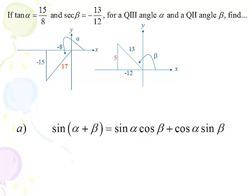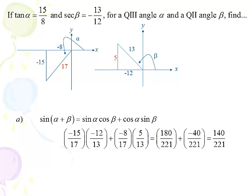We're going to find the sine of alpha plus beta, so we go to the formula sheet: sine alpha cosine beta plus cosine alpha sine beta. The sine of alpha is negative 15 seventeenths, the cosine of beta is negative 12 thirteenths, the cosine of alpha is negative 8 seventeenths, and the sine of beta is 5 thirteenths. We do some multiplication and subtraction, and we get the sine of alpha plus beta to be positive 140 over 221.